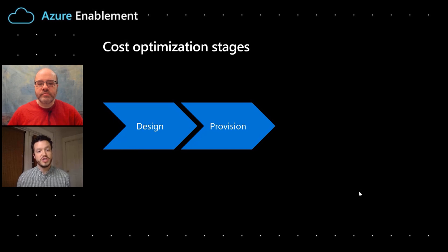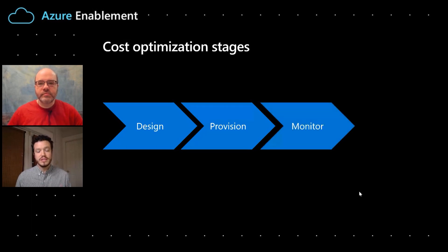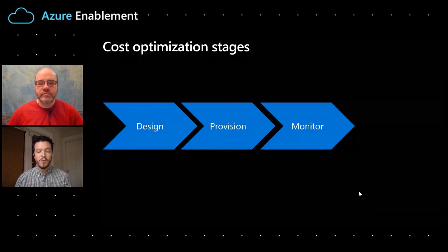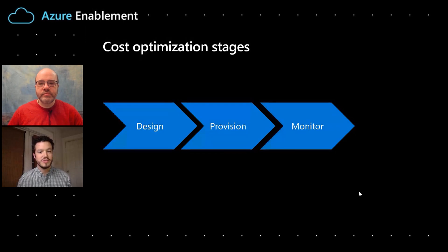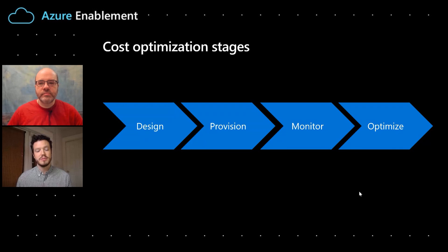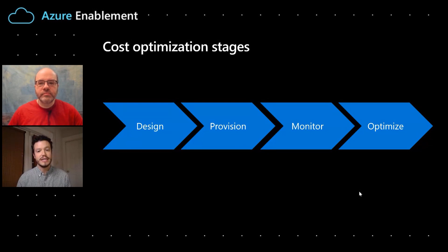Next, there's the provisioning step, where you're going to the different building blocks, picking them out, and setting them up to build your workload. Once it's running in the cloud, there's the monitoring step, where you keep tabs on how it's being used and what you're spending, constantly reviewing internally with the right stakeholders. And then lastly, there's the optimization step — what are the things you can do now that it's running to make it run more cost efficiently, ensure it's appropriately sized, and delivering business value at the right level.